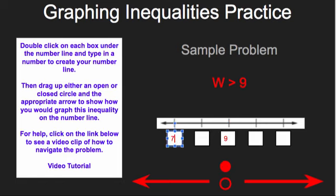Since we're dealing in positive numbers, it's going to count up going to the right. So you just double click on each box and then type in the number.